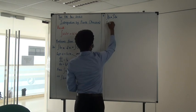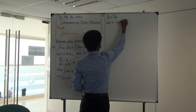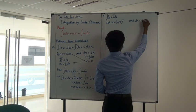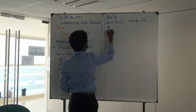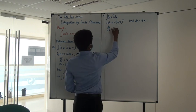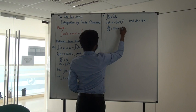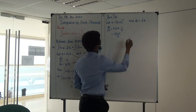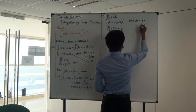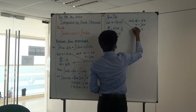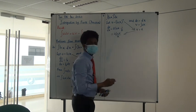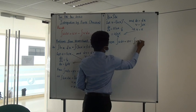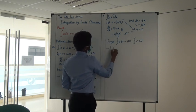Now let's integrate (ln x)². Let u be (ln x)² and dv be dx. If you differentiate u with respect to x, by chain rule that's 2·ln(x)·(1/x), so du = (2·ln(x)/x)dx. And v will be the integral of dx, so v equals x again.